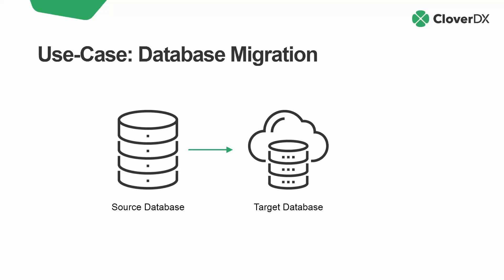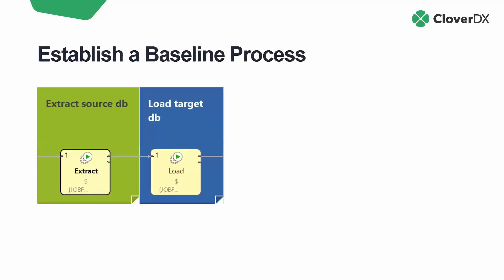Use case: source database to a target database. This is something we implemented for a client not too long ago — they needed to move data from system A to system B. Here's how it starts: we established a baseline process using components within CloverDX to build a workflow that extracts data from a source database and loads it to a target database. Super simple extract-load, not much transformation — think traditional ETL, pretty basic, just mapping one-to-one, essentially a replication scenario.